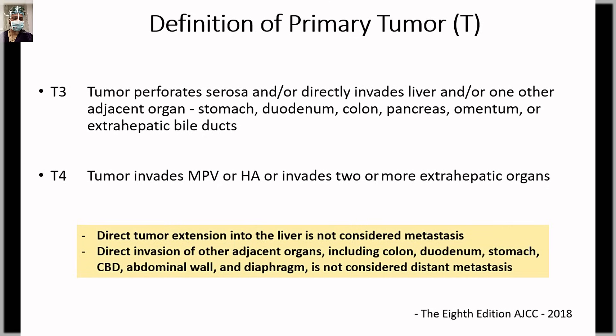T3 is when the tumor perforates the serosa on the peritoneal side or directly invades the liver and/or one other adjacent organ. T4 involves two or more extra-hepatic organs, or involvement of the main portal vein or main hepatic artery. Direct tumor extension into the liver is not considered metastatic — it is classified as T3. Direct invasion of other adjacent organs including colon, duodenum, stomach, CBD, abdominal wall, or diaphragm is not considered distant metastasis. Invasion of two or more organs is T4, considered local invasion rather than metastatic disease.